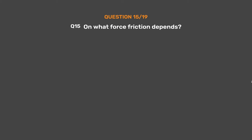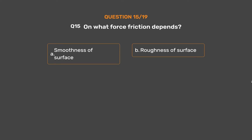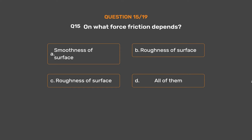Question number 15. On what does friction depend? Option A: Smoothness of surface. Option B: Roughness of surface. Option C: Roughness of surface. Option D: All of them. The correct answer is Option D: All of them.